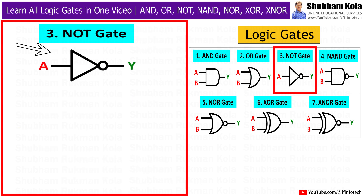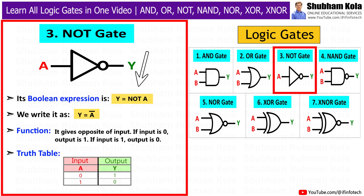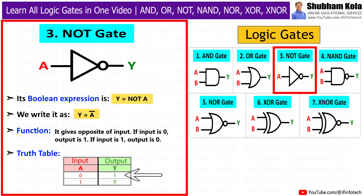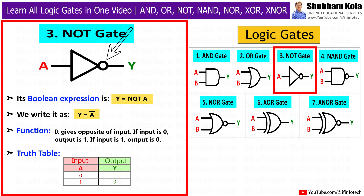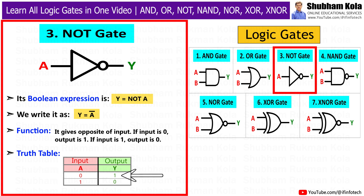The third gate is the NOT gate, also called an inverter. Its Boolean expression is y = NOT A, written as y = Ā (A bar). It gives the opposite of the input: if input is 0, output is 1; if input is 1, output is 0. Its symbol is a triangle with a small circle at the output side. In the truth table, there is only one input A: if A is 0, y is 1; if A is 1, y is 0.